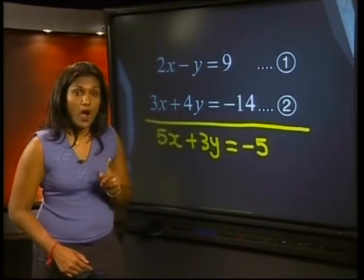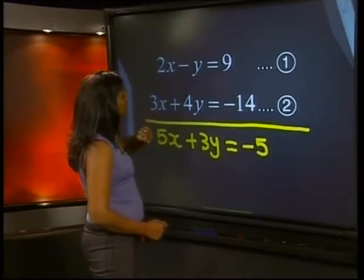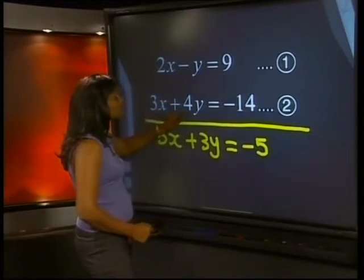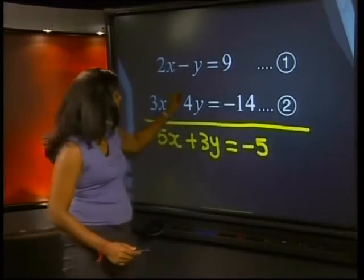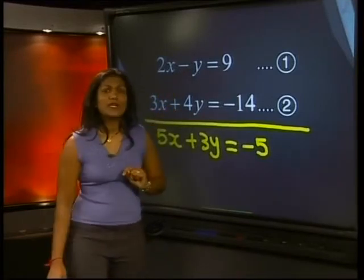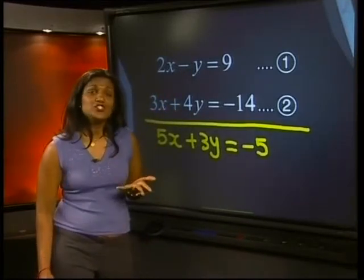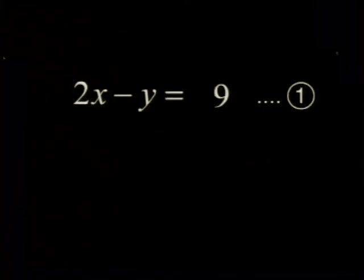Now, look at the coefficients of y in the two equations. Here, the coefficient is negative 1. And here, it is positive 4. Now, it would be great if this y could have a coefficient of positive 4. Because then we could just add the two equations and the unknown would be eliminated. We can multiply every term in the equation by 4.